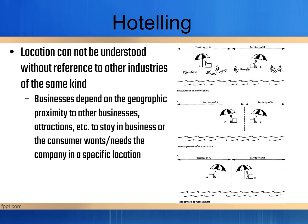The Hoteling theory basically explains why businesses end up being close to one another, when it would actually be better for consumers if they were spread out. The location cannot be understood without reference to other industries of the same kind. Businesses depend on geographic proximity to other businesses and attractions to stay in business, or the consumer wants and needs the company in a specific location.